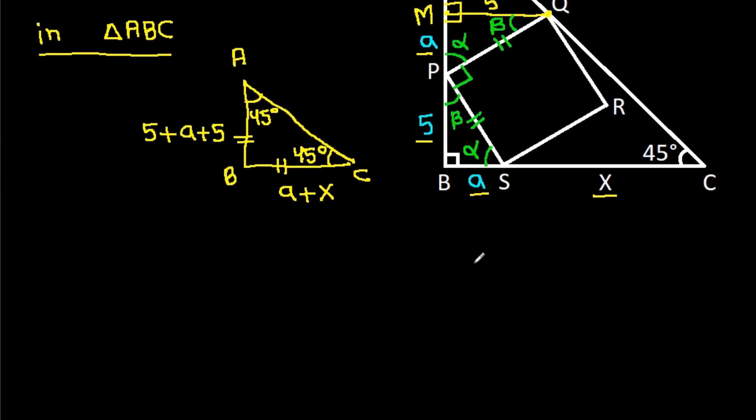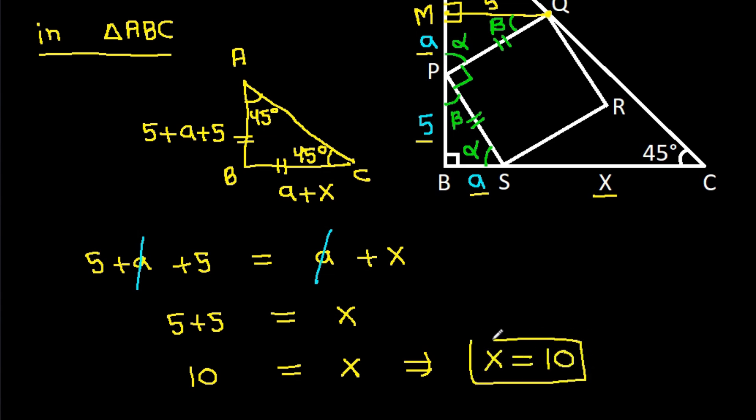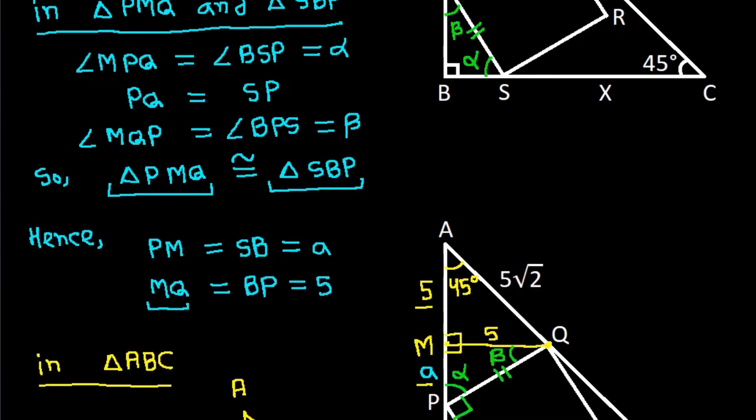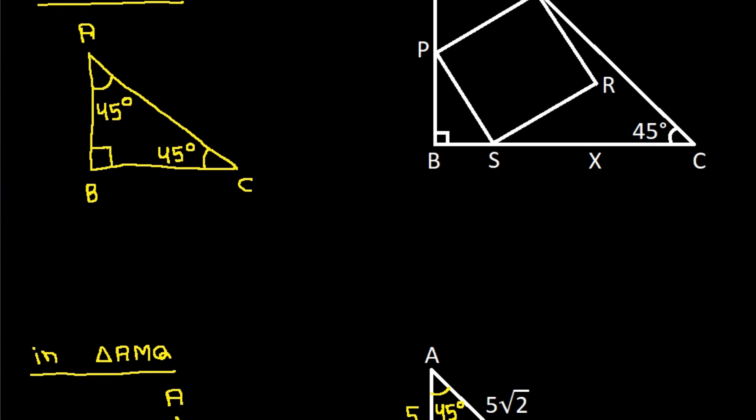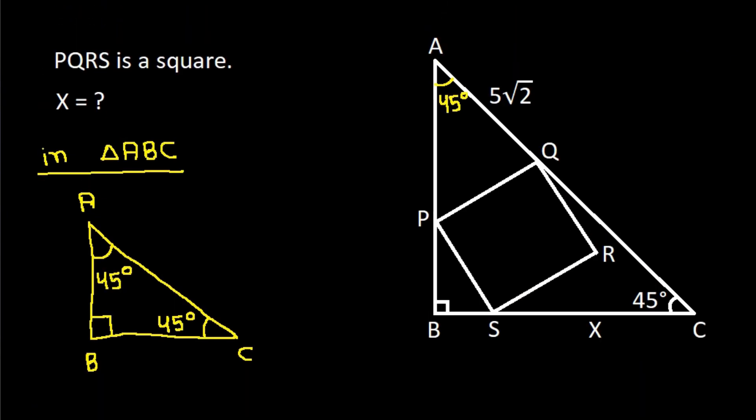So 5 plus a plus 5 is equal to a plus x. The a will get cancelled, so 5 plus 5 is x, and 10 is equal to x. We get x is 10.